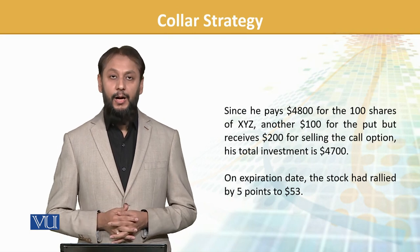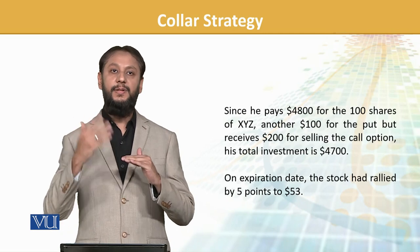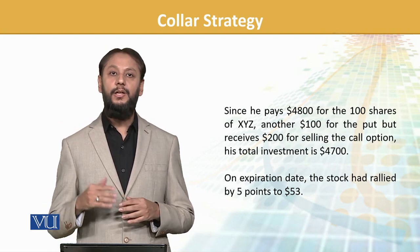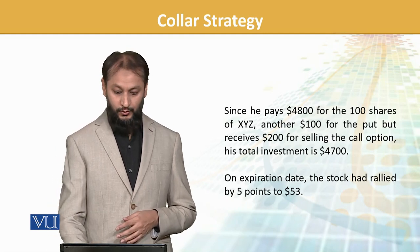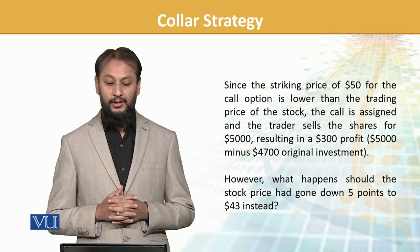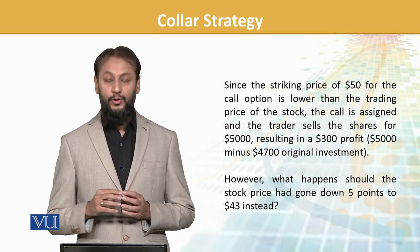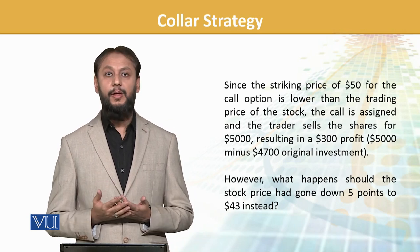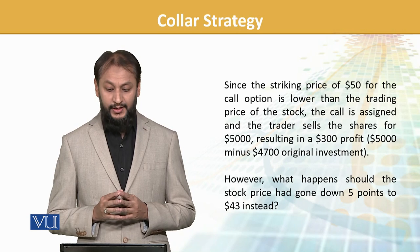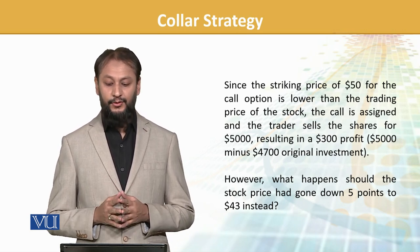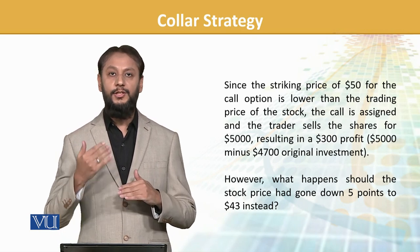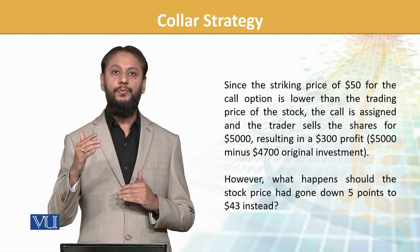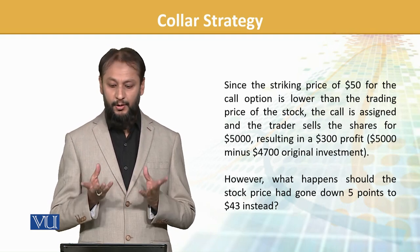If the stock rallies by 5 points to $53 — since the strike price of the call is $50, which is lower than the trading price of $53, the call option will be exercised. The trader sells the shares for $5000, resulting in a $300 profit.